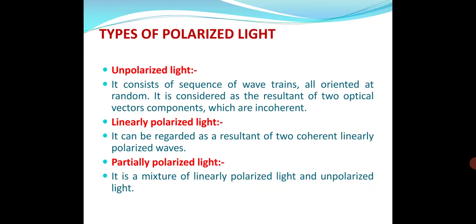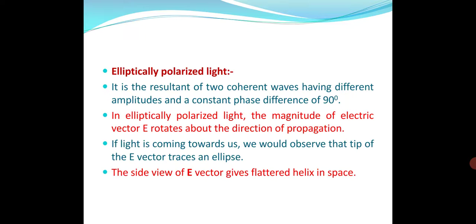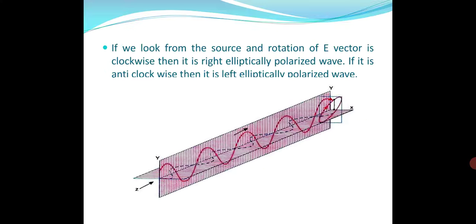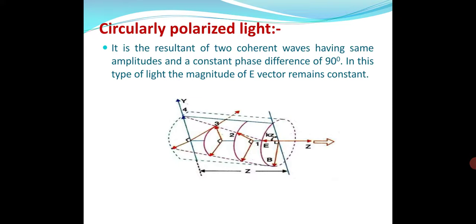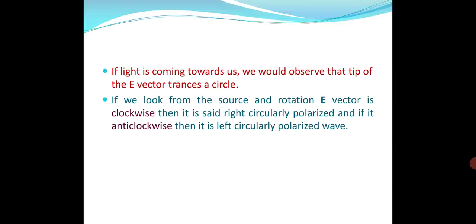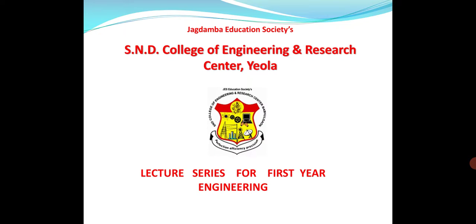Types of polarized light: unpolarized light, linearly polarized light, elliptically polarized light, and circularly polarized light. When we are transmitting microwaves towards our satellite, we are using circularly polarized light. Thank you.